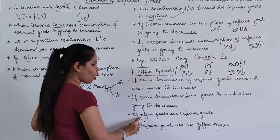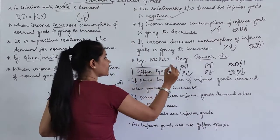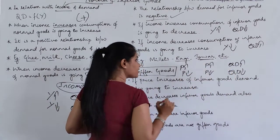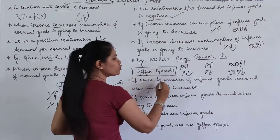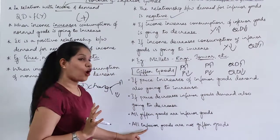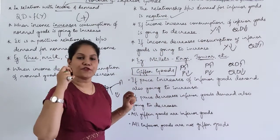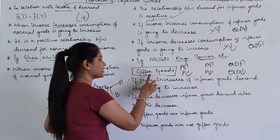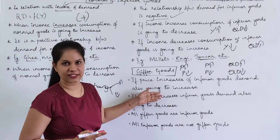All Giffen goods are inferior goods, because it is the inferior good's price increasing that causes quantity demand to increase. But not all inferior goods are Giffen goods — only those goods whose quantity demand responds to price in this way are called Giffen goods. Giffen is the name of an economist who first described this theory, and on his name the concept is called Giffen goods.